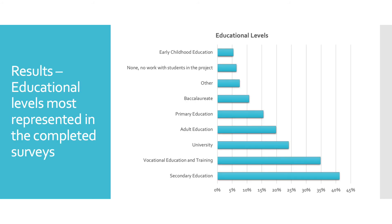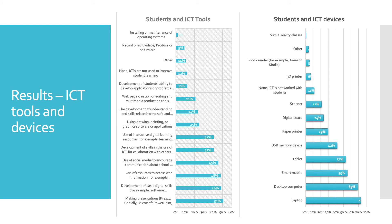As regards to the results obtained, the following slides present those related to students. First, the educational fields most represented in the projects analyzed have been secondary education and vocational education and training, followed by universities and adults. Second, the three most prominent digital tools are making presentations, development of basic digital skills, and use of resources to access web information. Third, the most common devices used in the Erasmus Plus projects are laptops, desktop computers, and smart mobiles.